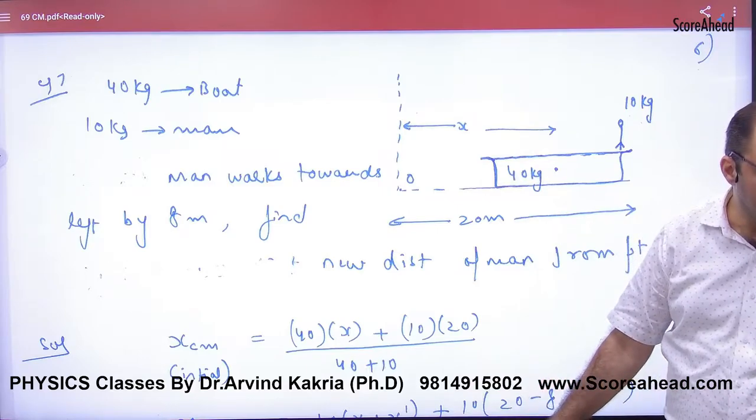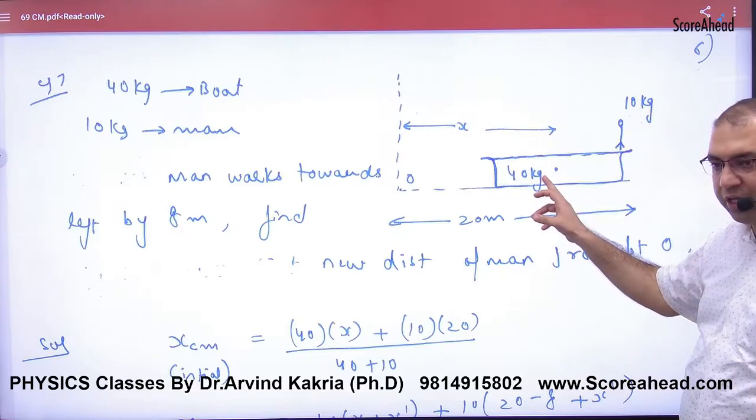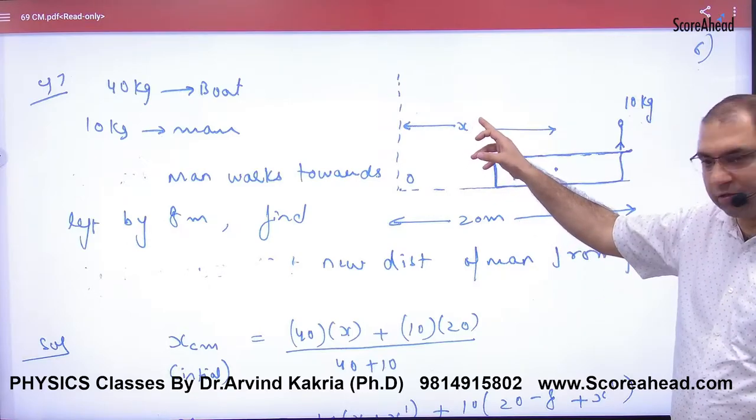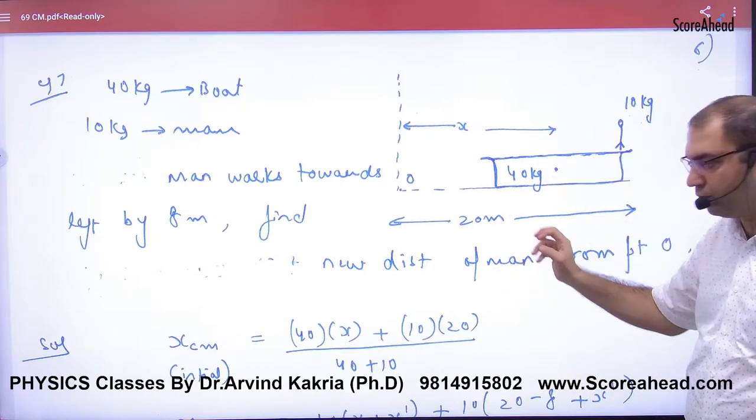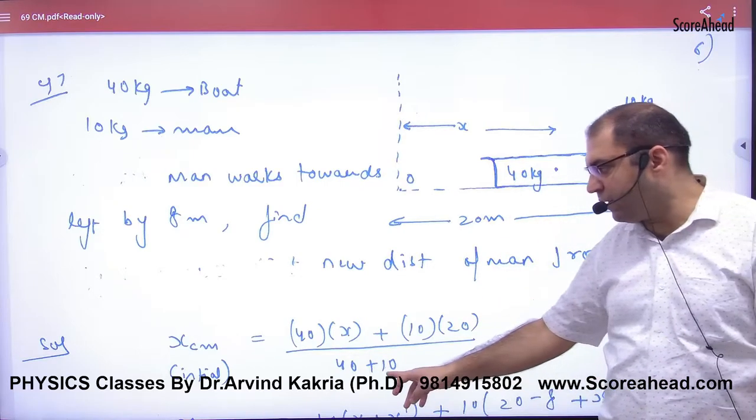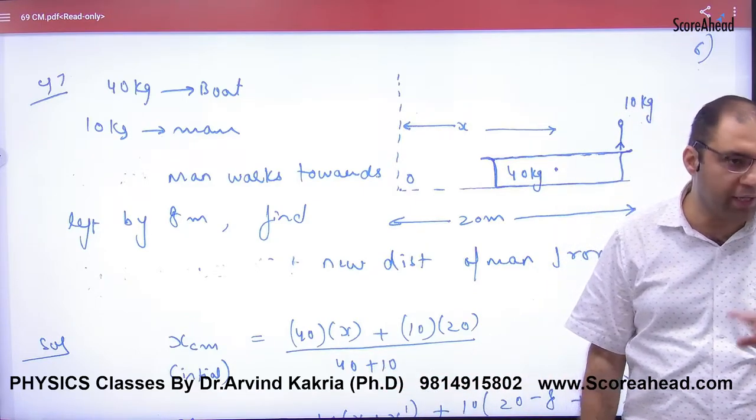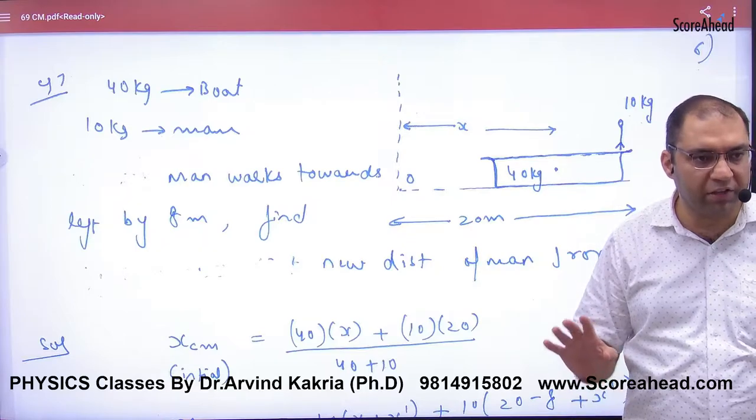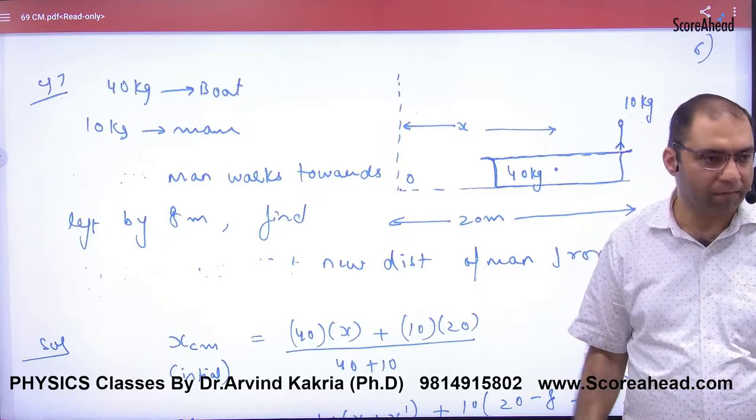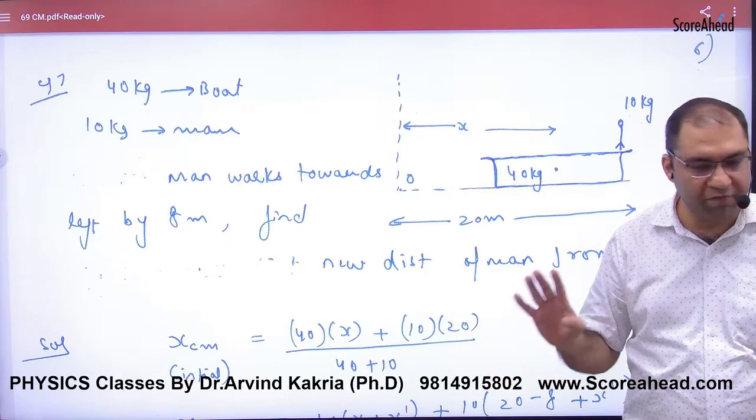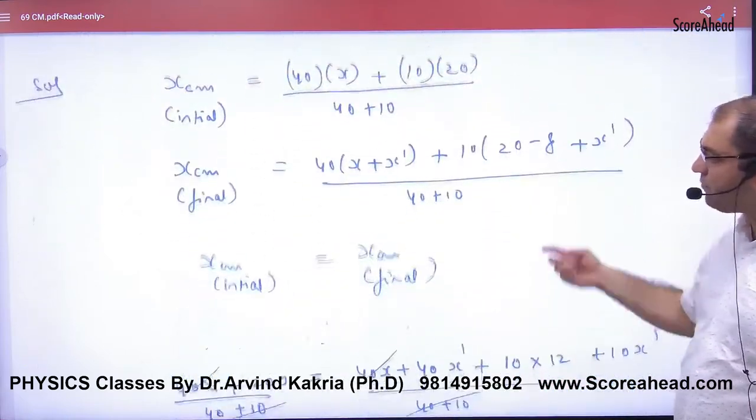Combined center of mass, how much? 40 kg m1 into x1 plus m2 into x2 upon m1 plus m2. So what is x center of mass? This one point clear then? Center of mass is the value of the entire system - the boat and man's center of mass. M1, x1, m2, x2 by m1 plus m2.